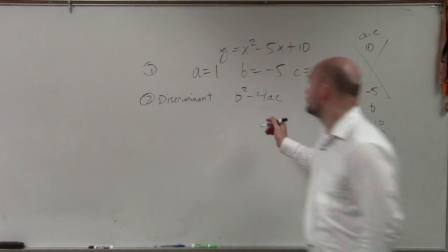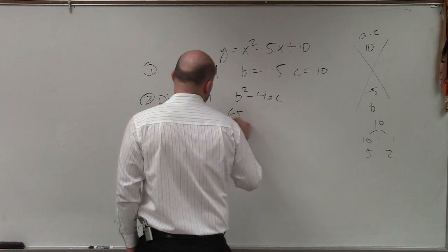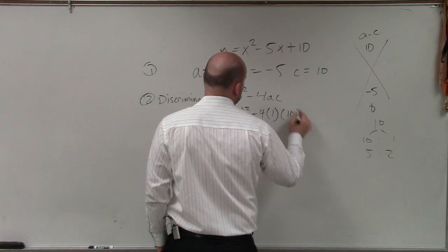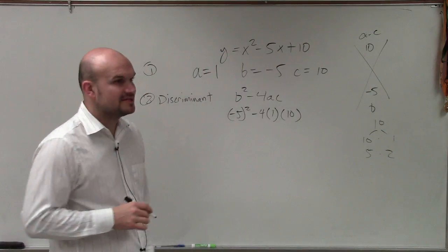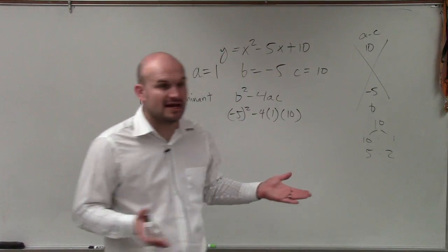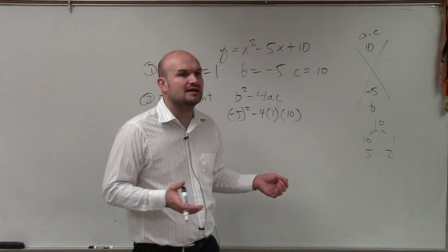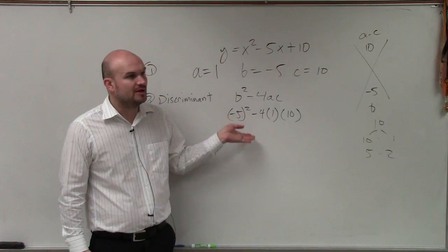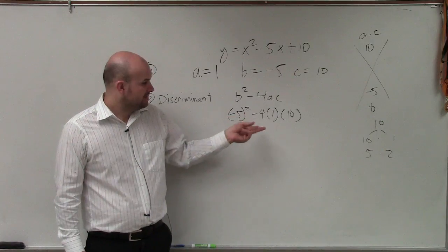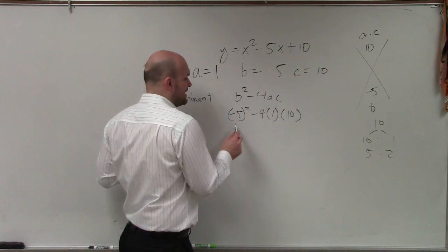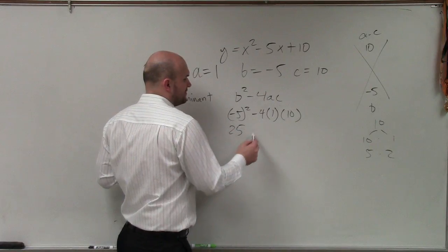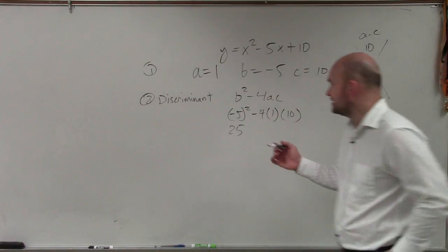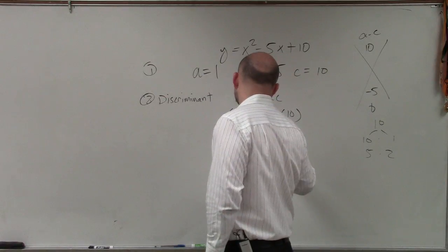Right now, I just want you to identify the discriminant, which is negative 5 squared minus 4 times a, which is 1, times c, which is 10. So does everybody see what I did? I just took the values for a, b, and c and I plugged them into this little formula. Now, I basically remember negative 5 squared is positive 25. And then negative 4 times 1 times 10 is going to be a negative 40.